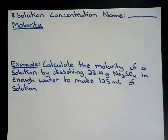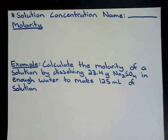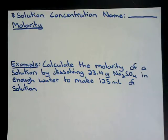Objective number three: calculate the volume of a solution required to react with a volume of a different solution using molarity and the stoichiometry of the reaction. Objective number four: calculate the amount of substance required to react with a given volume of solution using molarity and stoichiometry. Objective number five: calculate the concentration or mass of solute in a sample from titration data. Objective number six: define mass percentage, parts per million, mole fraction, molarity, and molality, and calculate concentrations in any of these units.